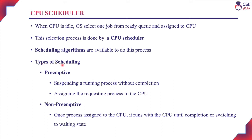There are two categories of scheduling: preemptive and non-preemptive. Preemptive scheduling is when a running job is suspended before completing its execution and another job is assigned to the CPU. Non-preemptive scheduling is when a process assigned to the CPU runs until it completes its total execution or switches to the waiting state for I/O service — there is no suspension in between.